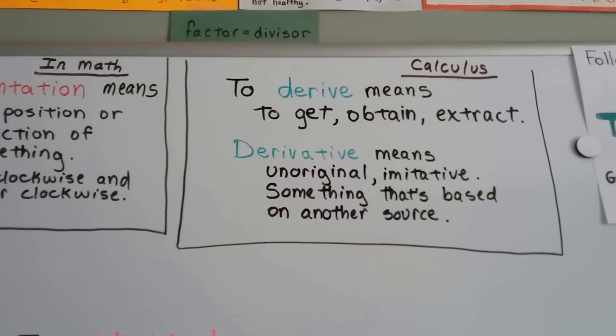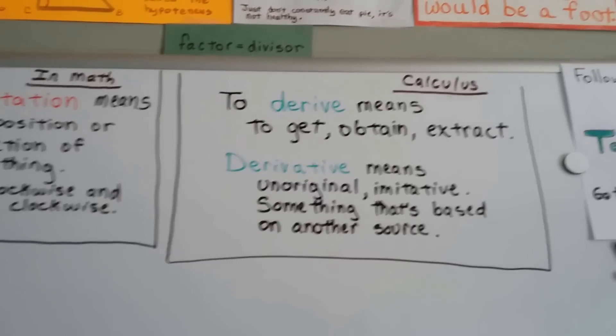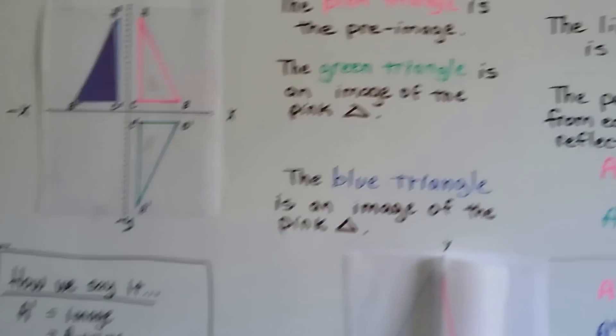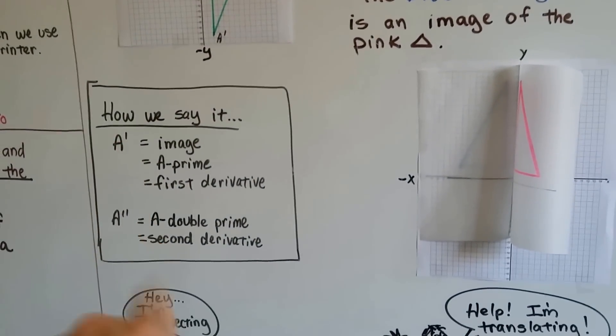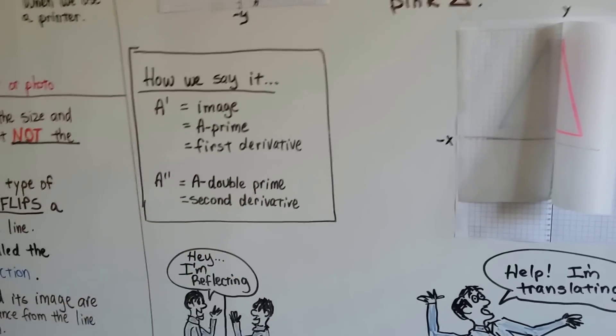To derive means to get something, to obtain something, to extract it. So a derivative is something that's unoriginal, it's not original, it's imitative, it's an imitation. It's something that's based on another source. So the way we say this with the little tick marks is prime and double prime. And if you saw three, what do you think it would be called?